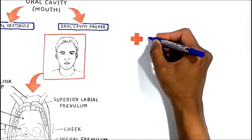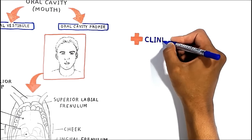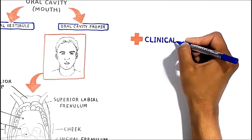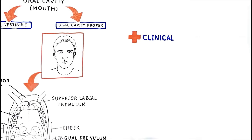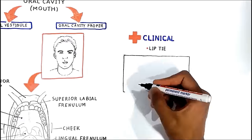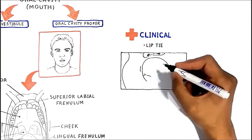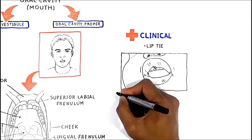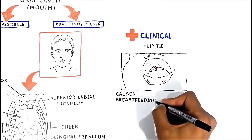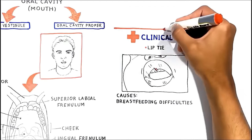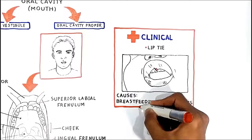In clinical practice, sometimes babies are born with a defect of the labial frenulum, which is called lip tie. It is characterized by an abnormally short and thick frenulum, causing problems with the breastfeeding of the infant.